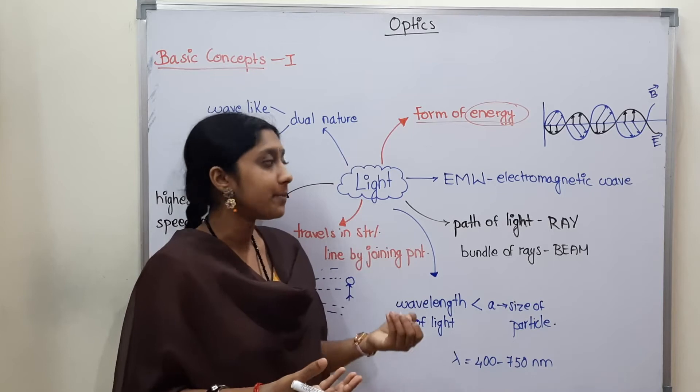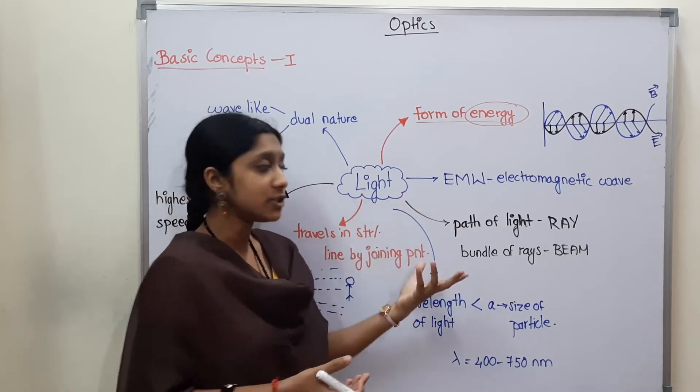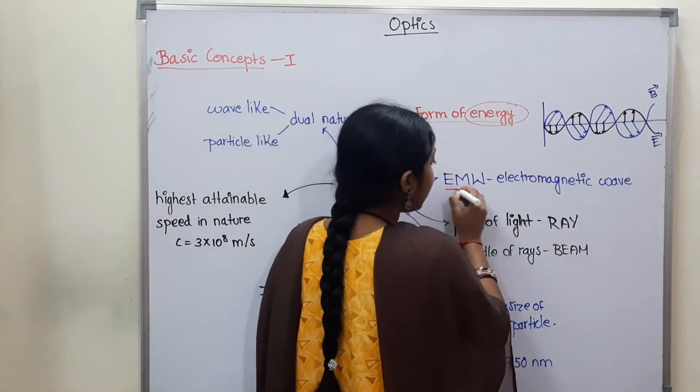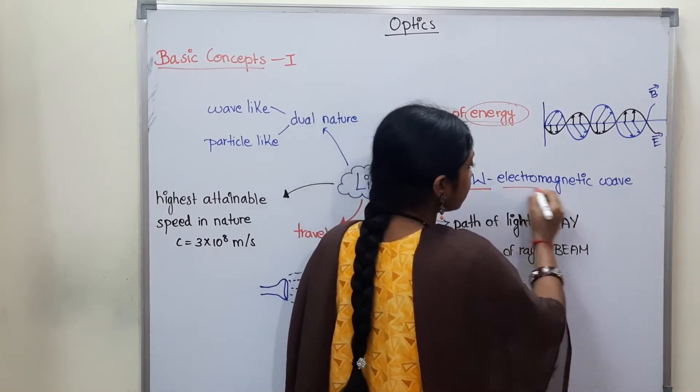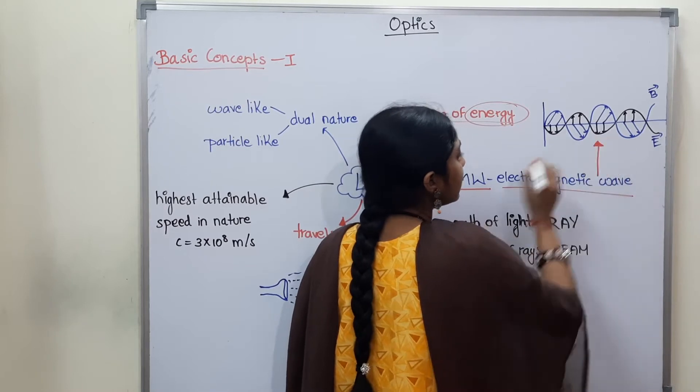We are going to talk about physical nature. So light - what we want to talk about? It is an EMW. EMW is electromagnetic wave. So light is an electromagnetic wave. This is the diagram.